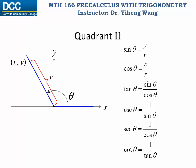If the terminal side of our angle theta falls in the second quadrant, then the x coordinate is negative but the y coordinate is positive. Therefore, since sine theta is y over r, it is still positive. But cosine theta is x over r, and since x is negative but r is always positive, cosine theta will be negative. And tangent theta is the ratio between sine theta and cosine theta, therefore it is now negative. Cosecant theta is the reciprocal of sine theta — positive again. Secant theta is the reciprocal of cosine theta — negative. Cotangent theta is negative as well.